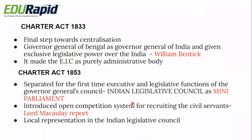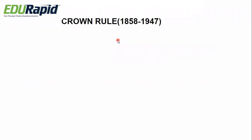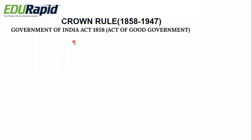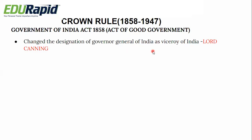Next we move to the Crown Rule period of 1858 to 1947. The significant Government of India Act 1858, also called the Act of Good Government, was enacted in the wake of the 1857 revolt — known as the Sepoy Mutiny or First War of Independence. It changed the designation of Governor General of India to Viceroy of India. Looking at the hierarchy: first Governor of Bengal, then Governor General of Bengal, then Governor General of India, and now Viceroy of India. Lord Canning was the first Viceroy of India.